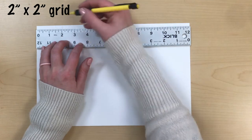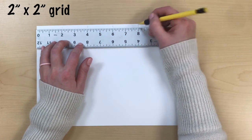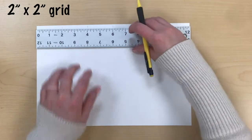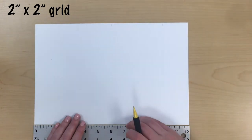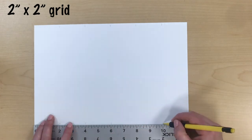So I'm gonna make a mark at two four six eight and ten. Slide your ruler to the bottom of the page, do the same thing. And connect.